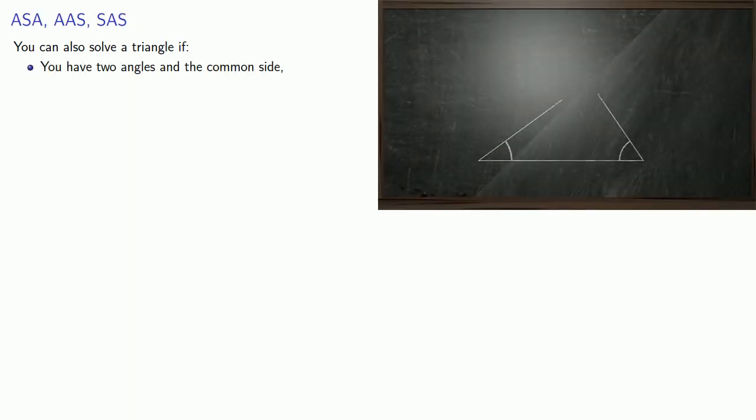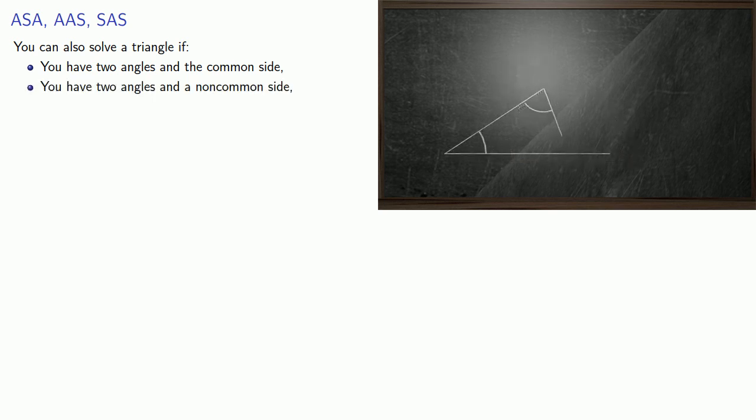You can also solve a triangle if you have two angles and the common side, two angles and the non-common side, or two sides and the included angle. And in these cases, the triangle always exists and it's always unique.